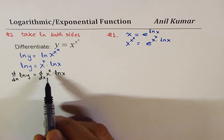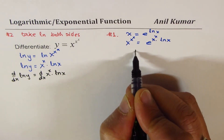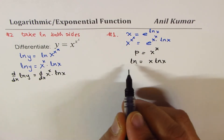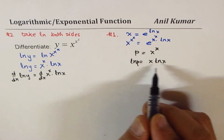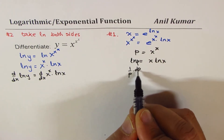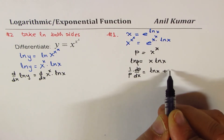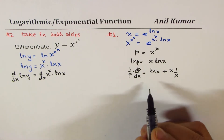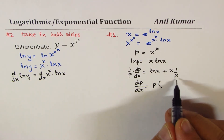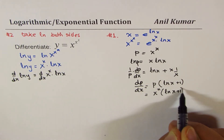Let's find the derivative of x to the power of x using the same rule. Let p equal x to the power of x, then ln p equals x ln x. Taking the derivative of both sides: 1 over p times dp/dx equals ln x plus x times 1 over x, which simplifies to ln x plus 1. So dp/dx equals x to the power of x times (ln x + 1).